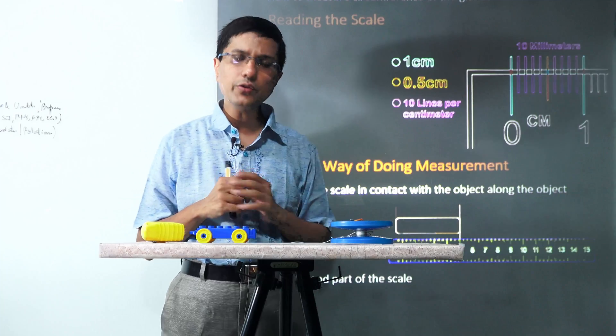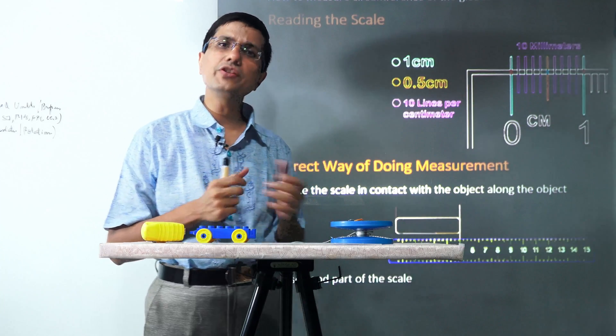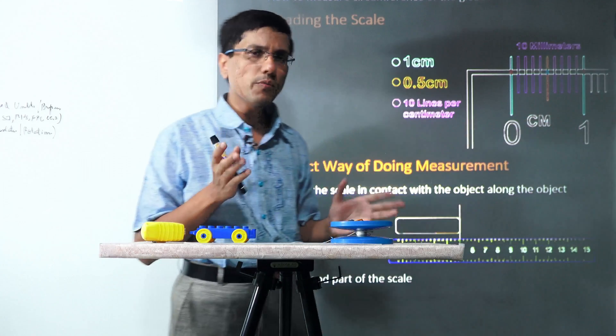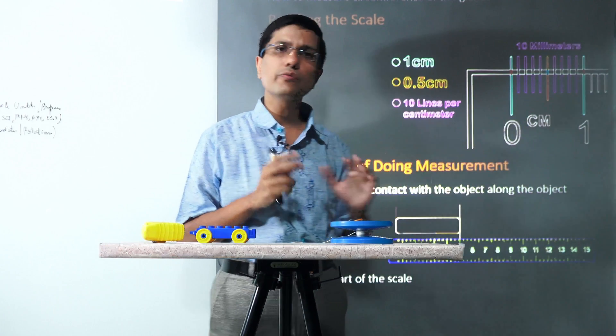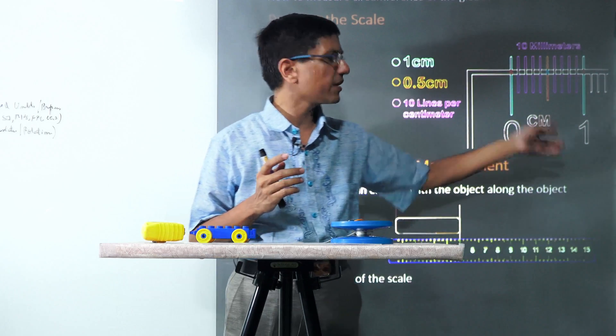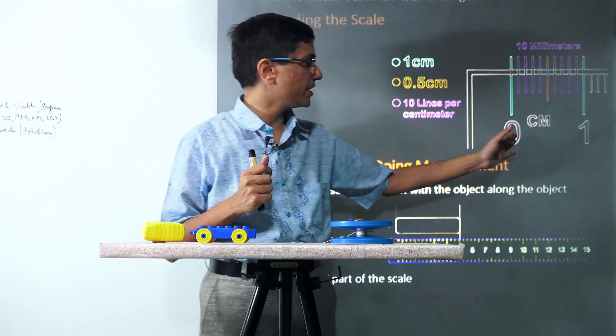First, we need to be able to read the scale of our measuring device. For example, look at this scale. This is a normal centimeter scale with gradings—larger gradings for centimeters and smaller grades for millimeters. A centimeter is obviously divided into 10 millimeters.